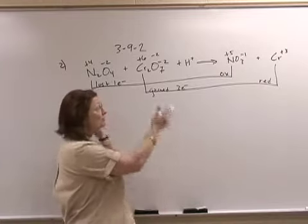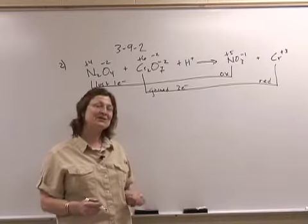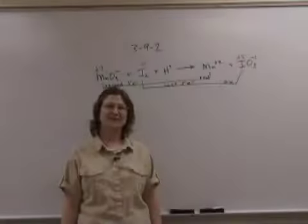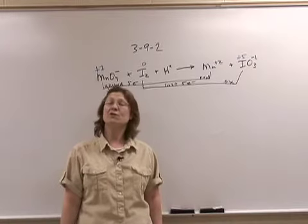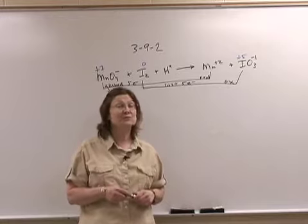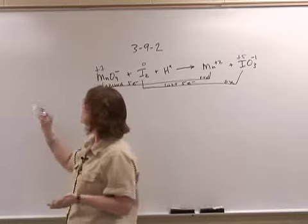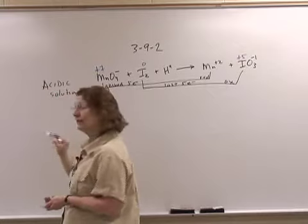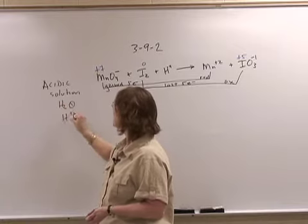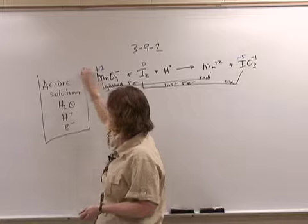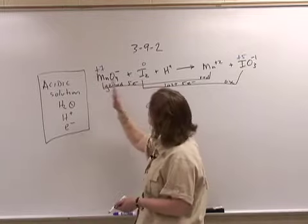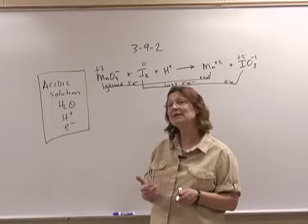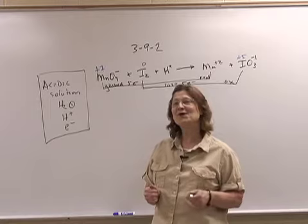Now we're going to learn how to balance this complete reaction by the half-reaction method. In acidic solution, there are 3 things that we are allowed to add to balance half-reactions: water, hydrogen ions, and electrons. That is all. Where I see that the element has changed, I pull that out — the ones connected by the brackets — and that is my half-reaction that I need to balance independently before I put them back together. That's why we call it the half-reaction method.